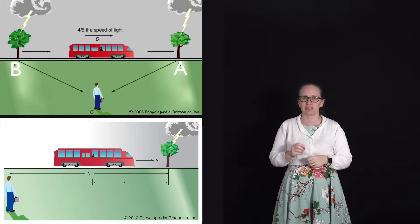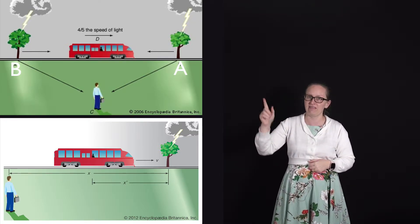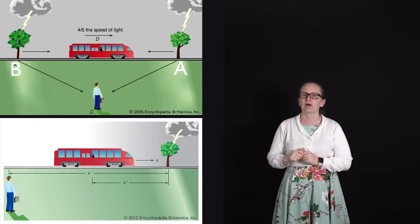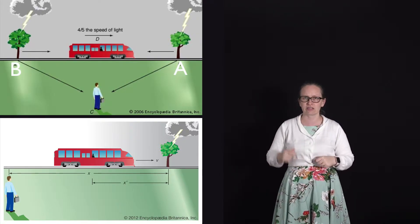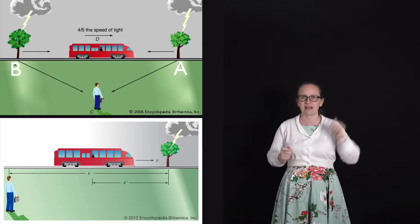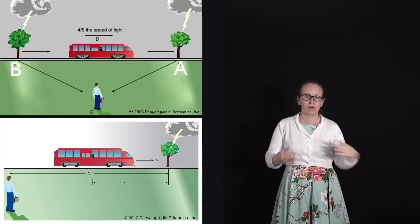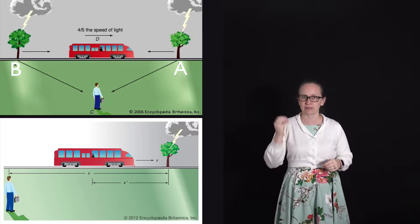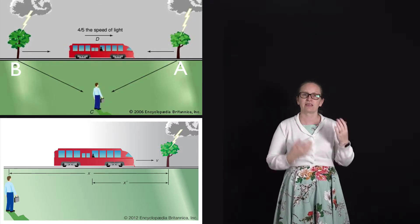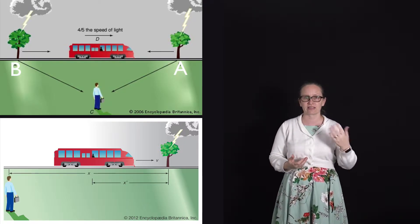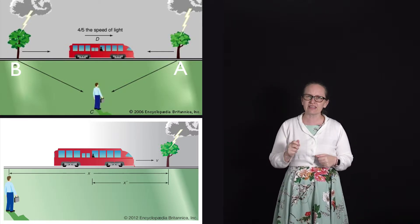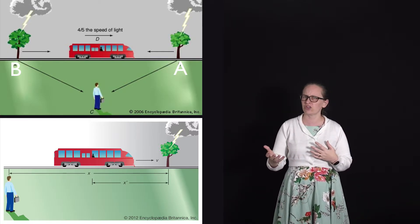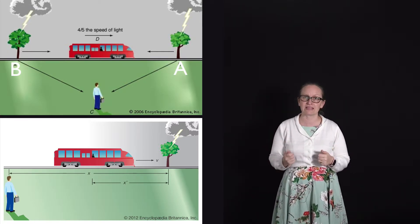So the passenger says, the lightning hit at A first and B second, while the observer outside the train says, no, the lightning hit at A and B at exactly the same time. Well, who's right? In this case, they're both correct because it depends on your frame of reference, the order in which certain events take place. So, let's have a look at how we can also describe this using space-time diagrams.